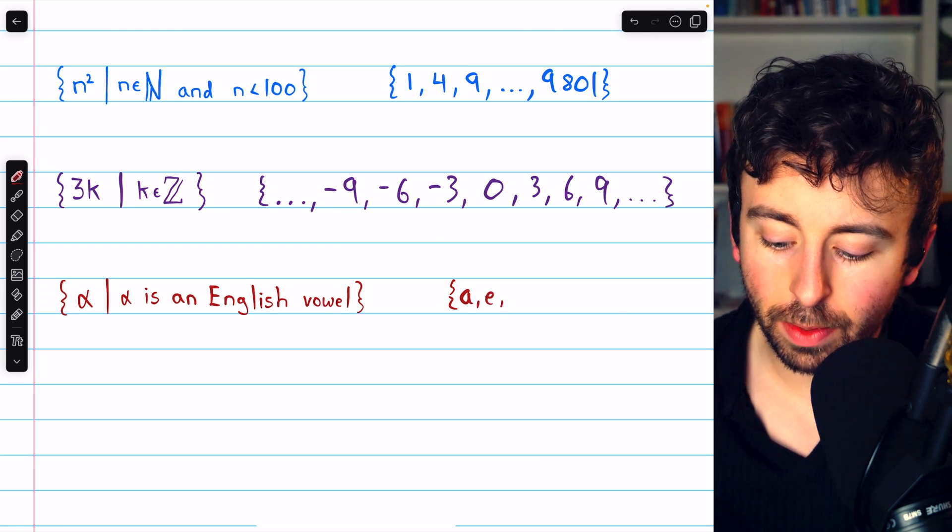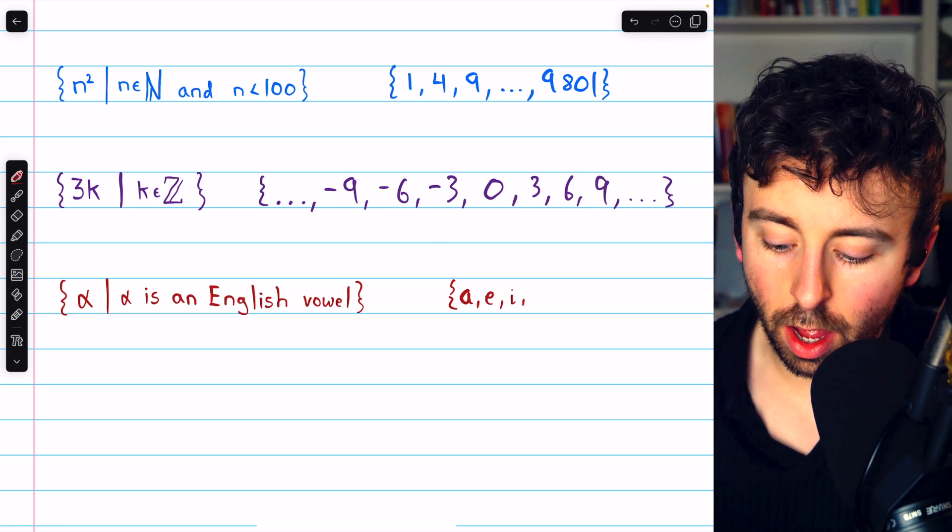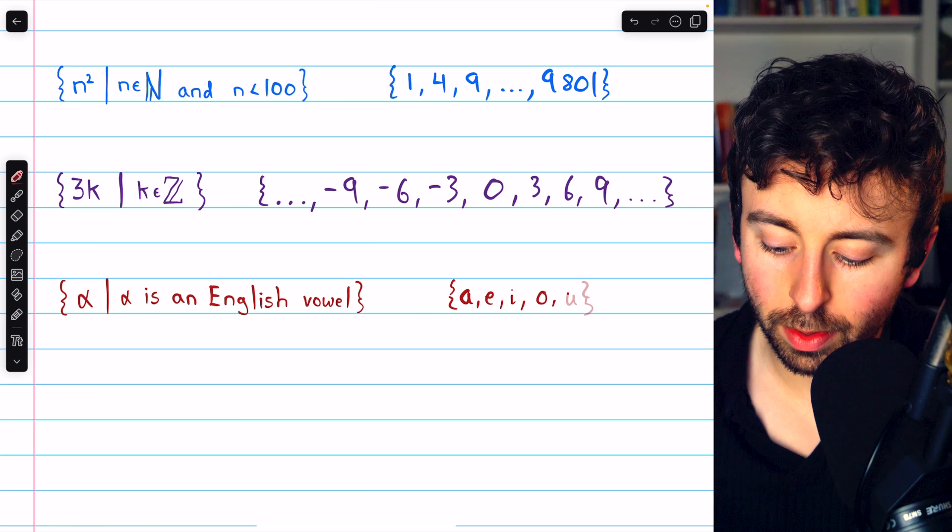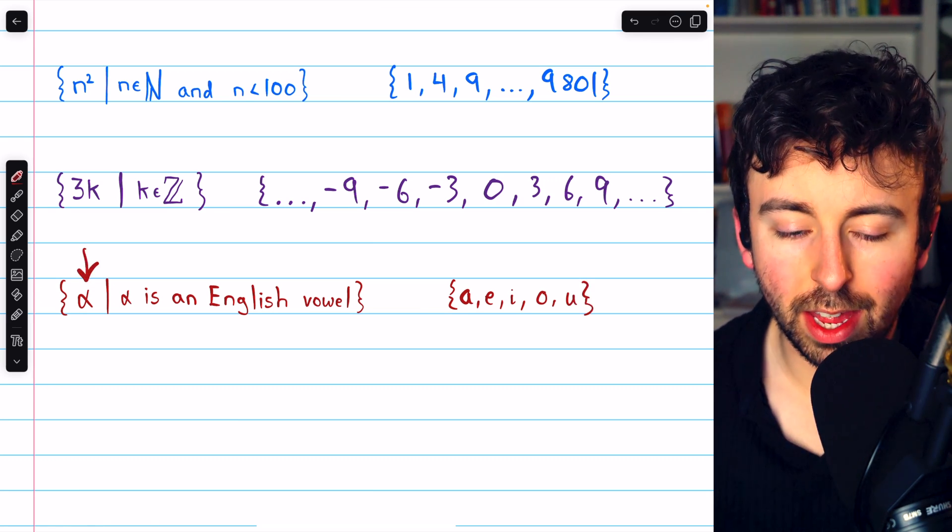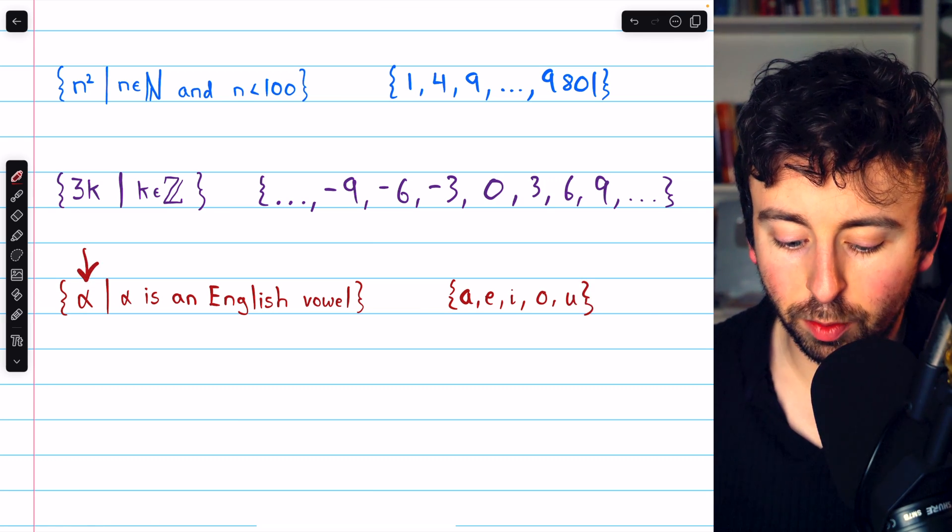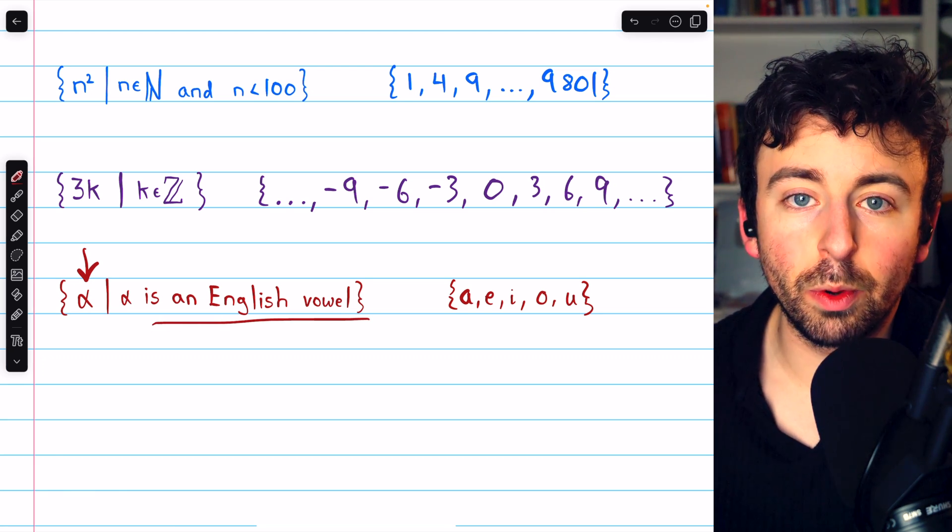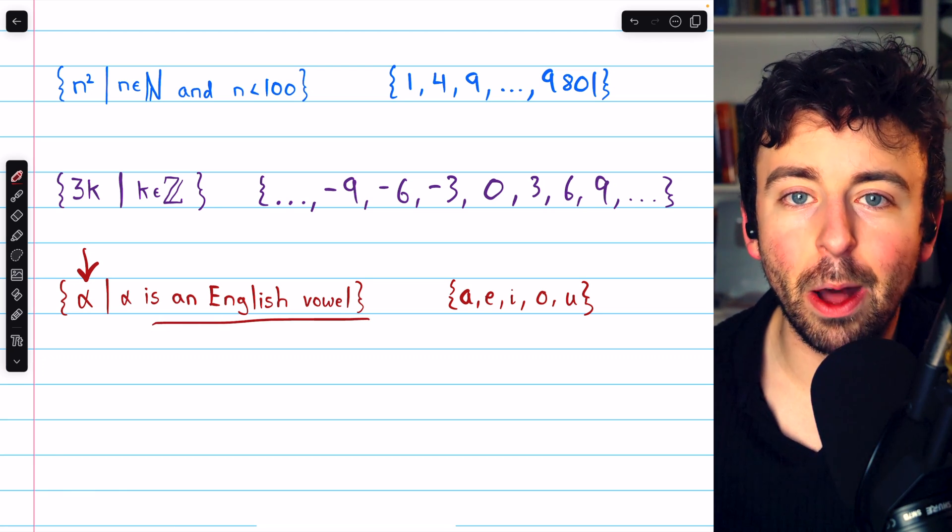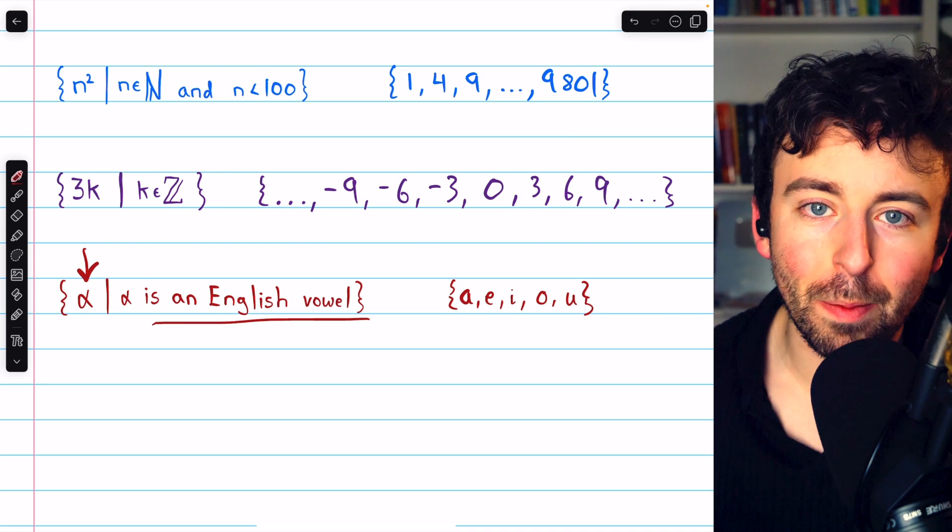So this would be the set containing A, E, I, O, and U. We name the arbitrary representative here alpha, because of course the set is talking about English vowels. So it would be confusing to give an English vowel name to the general representative.